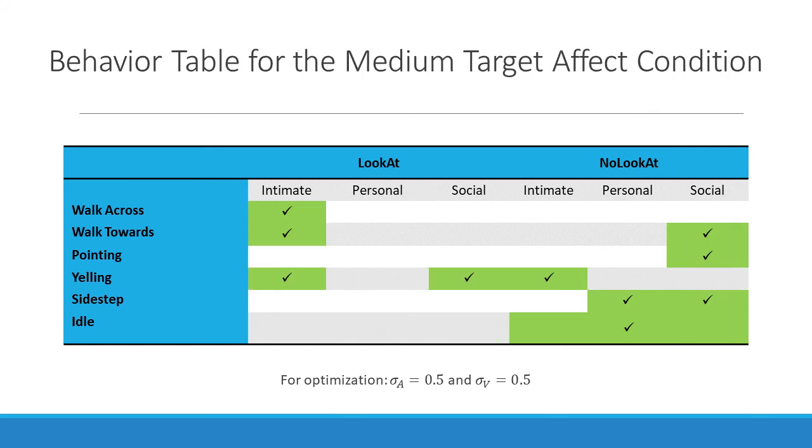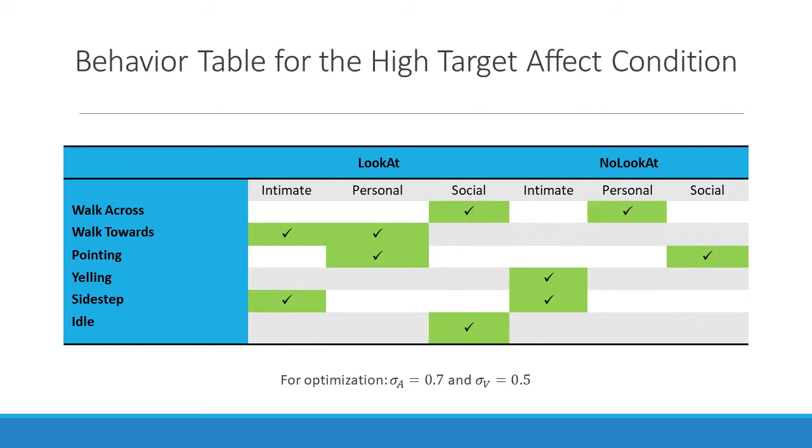This is the medium target effect condition. Again, we give the target value of 0.5. And here you can see there's almost an equal number of behaviors for look-at and no-look-at. And finally, the behavior table for high target effect. The value that we provided was 0.7. And you can see it is more towards the look-at side. Again, correlating with the paper that discussed about how look-at conditions affect users more in crowds. And they give off a more negative feel.